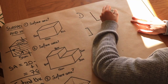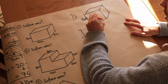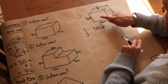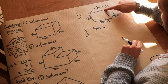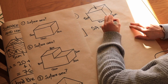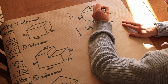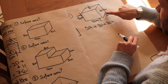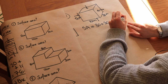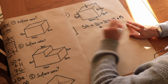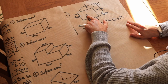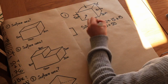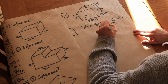For the first solid — a cuboid of 5 cm, 10 cm, and 3 cm — the top and bottom are each 10 times 3, which is 30, giving 60 total. The right and left sides are each 3 times 5, which is 15, giving 30 total. The front and back are each 10 times 5, which is 50, giving 100 total. Adding those together gives 190 centimetres squared.